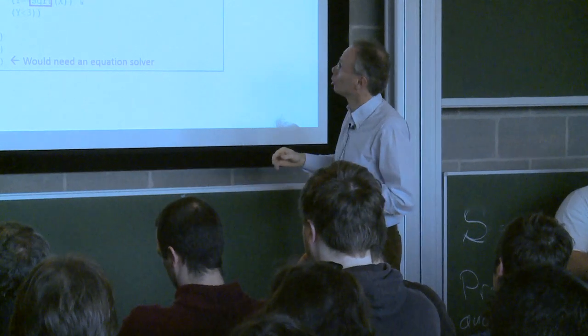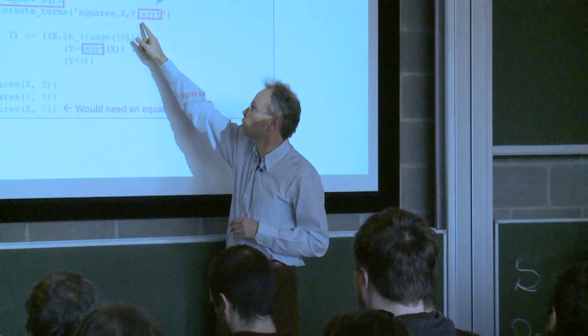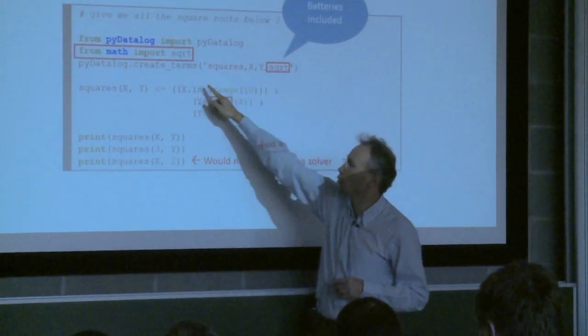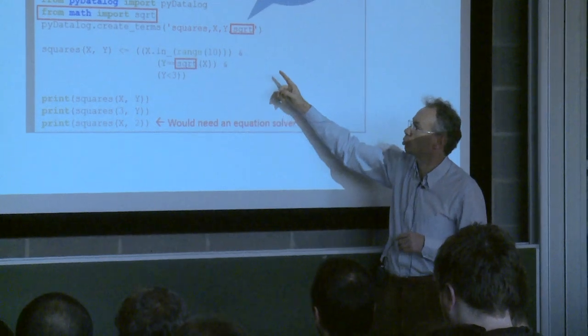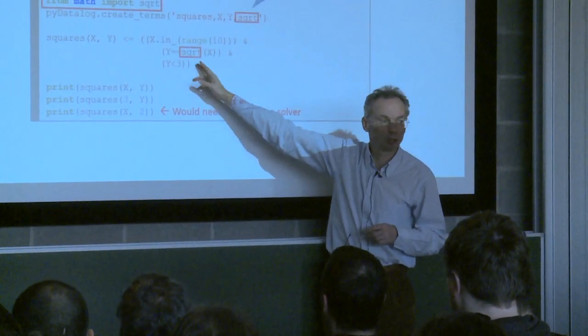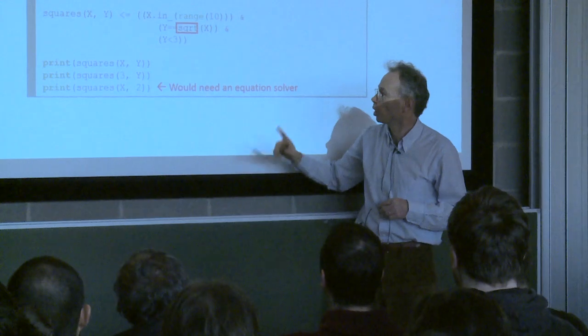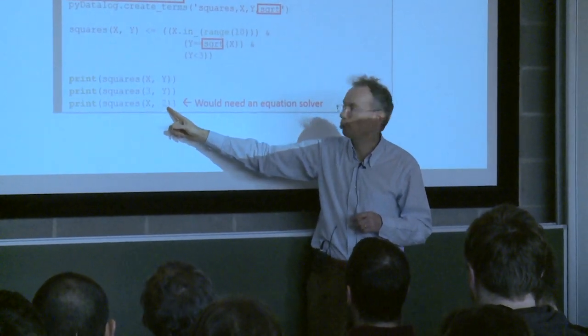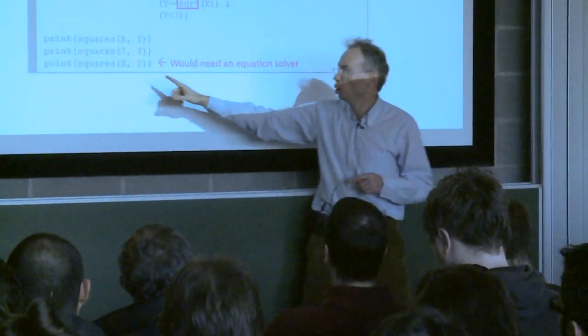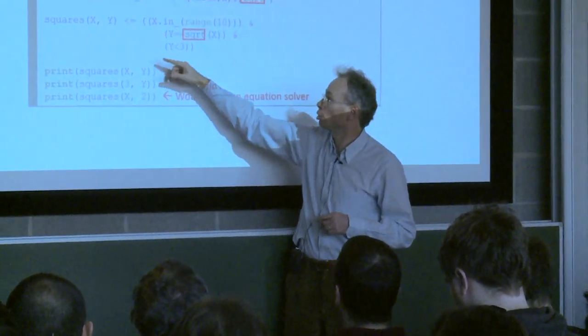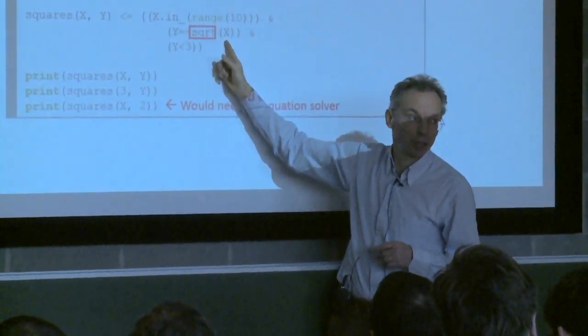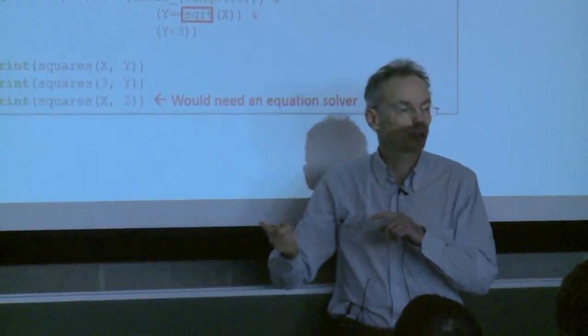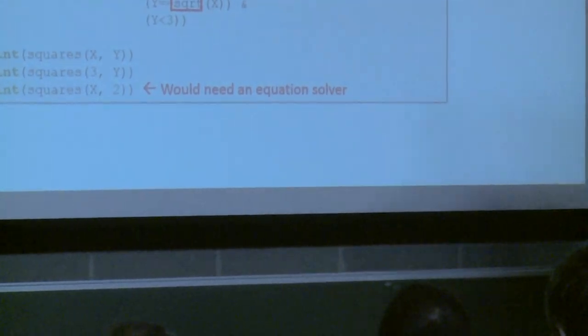And then the last thing about this small example is that I'm using the square root function from the math library. So you have to declare it with this function to give it the magic capability of logic programming. But then you can use it in a logic clause. And so you really have batteries included there. One thing to comment here is that this actually does not work today with PyDatalog, but will come later when we have an equation solver. Because when you try to resolve this using that clause, you see that y is 2 and you are looking for the x that is corresponding to that. Today PyDatalog doesn't know that the square root is the inverse of the square.